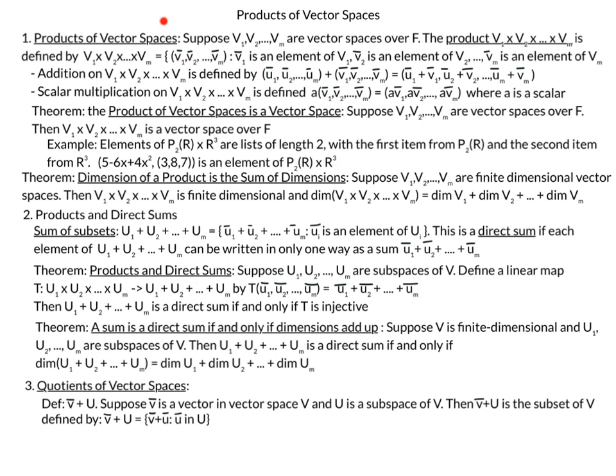We start by defining the product of several vector spaces. Suppose we have vector spaces V1, V2 up to Vm over some field. The product V1 cross V2 cross up to Vm is defined by this m-tuple where we have a vector V1, a vector V2 up to a vector Vm. The first vector V1 is an element of the first vector space, V2 is an element of the second vector space, and so on up to Vm in the m-th vector space.